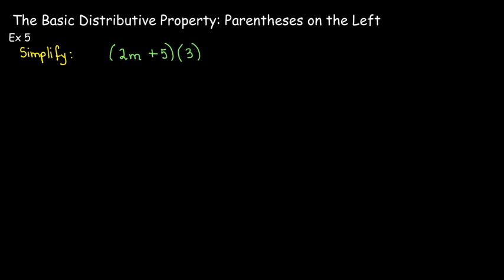The order of multiplication doesn't matter, so we could put the group on the left and the multiplier on the right and still have a distributive property. I still think of this as a positive 3 multiplied by a positive 2m and a positive 5, which gives me 6m plus 15.